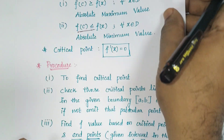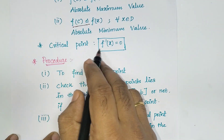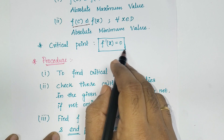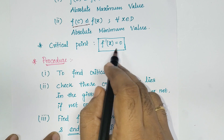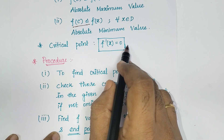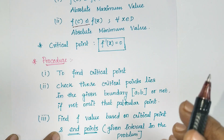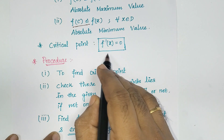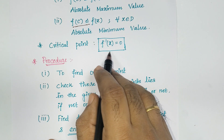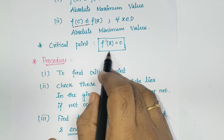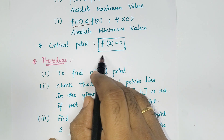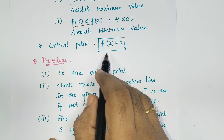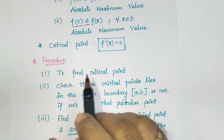Before identifying absolute maximum and minimum, we should know what is a critical point. A critical point is where f'(x) equals 0. From the domain, if you take any point and the derivative gives zero, that is our critical point. To identify the critical point, we differentiate the given equation and equate to zero — the point you get should satisfy the equation. That is called a critical point.